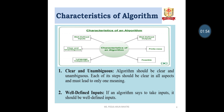Clear and Unambiguous: The algorithm should be clear and unambiguous. Each step should be clear in all aspects and must lead to only one meaning. Well-Defined Input: If an algorithm says to take an input, it should be a well-defined input used in C programming.